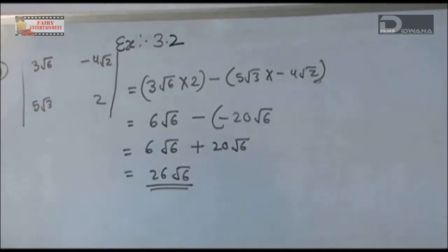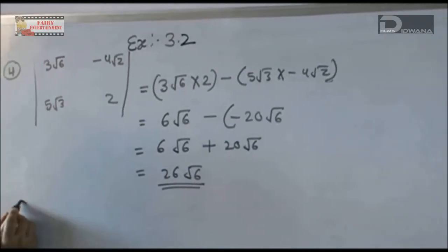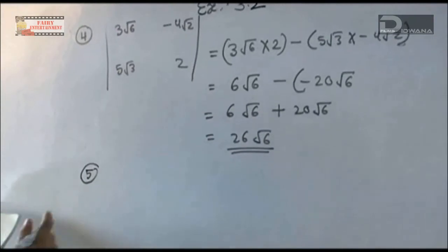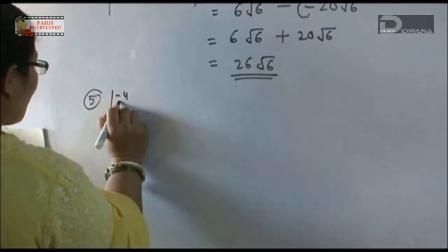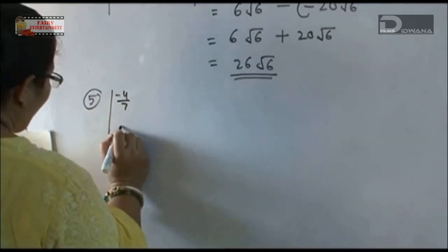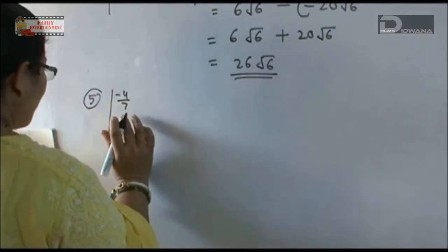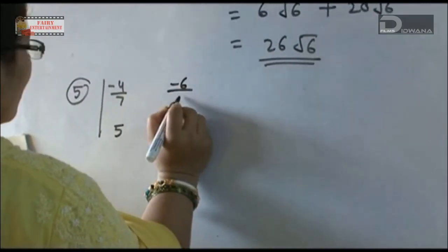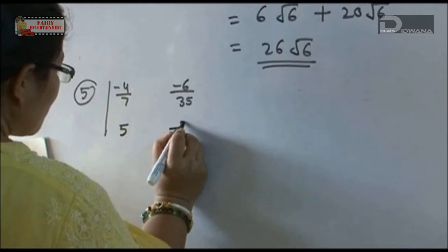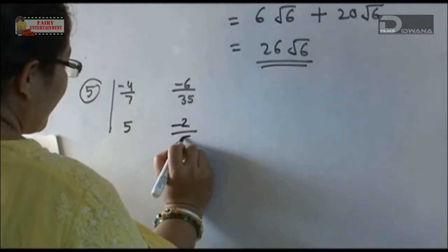Then we solve question number 5. The question will be -4/7 upon 5, sorry not upon 5, it is -6/35 - 2/5.